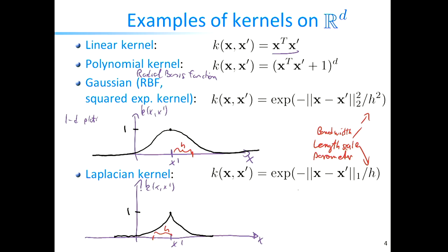We started with the linear kernel — the inner product in the original feature space — which was the basis for the polynomial kernel: essentially the linear kernel raised to some power, or more precisely the linear kernel plus some constant raised to a power. We saw how this efficiently computable kernel implicitly represents exponentially high-dimensional mappings, representing all possible monomials up to some degree in all input variables.